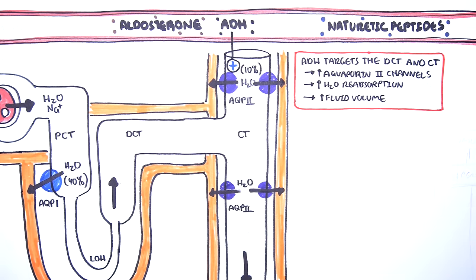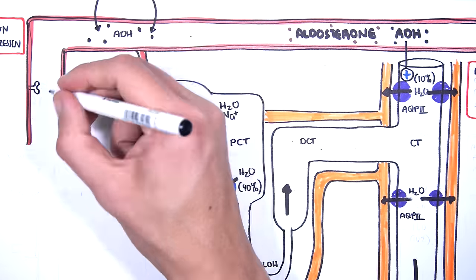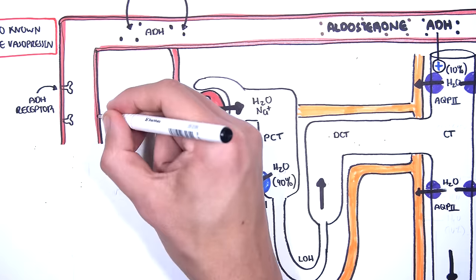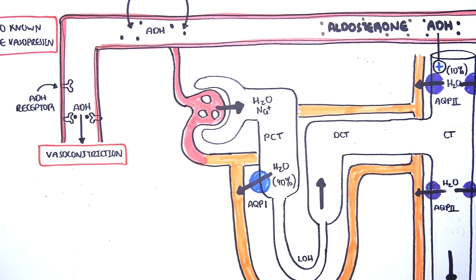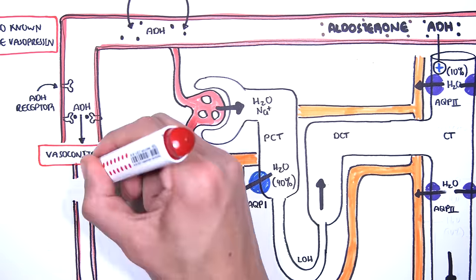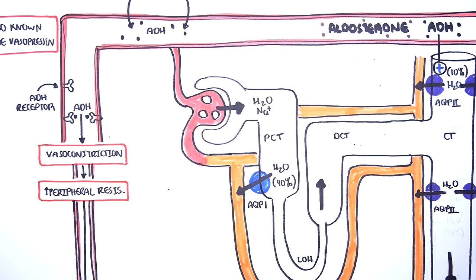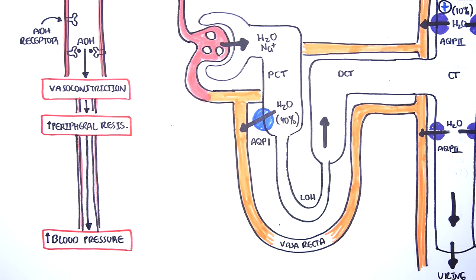ADH also has an effect on peripheral resistance. There are ADH receptors on blood vessels. When ADH binds, it can cause vasoconstriction, which increases peripheral resistance, and so can increase blood pressure. However, ADH's role in vasoconstriction is mainly during a lot of blood loss.